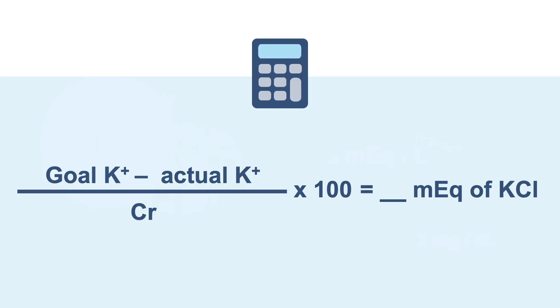Let's recall the equation from before. Now we input our goal potassium of 4 minus actual potassium of 3.2, then divide by the patient's creatinine of 2. Finally, multiply by 100. That gives us 40 milliequivalents of potassium chloride.